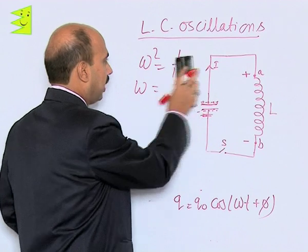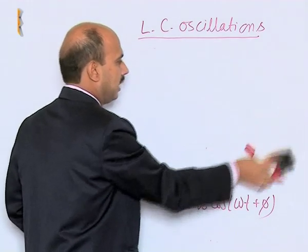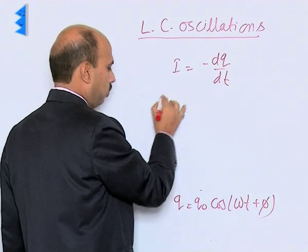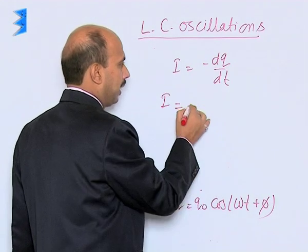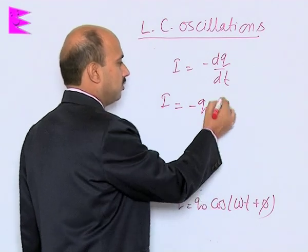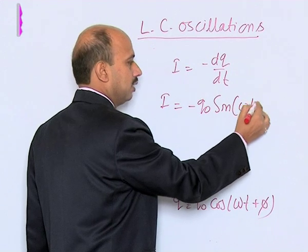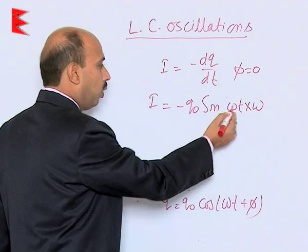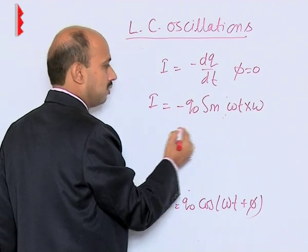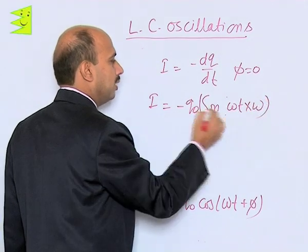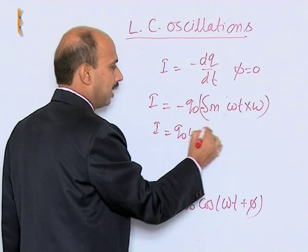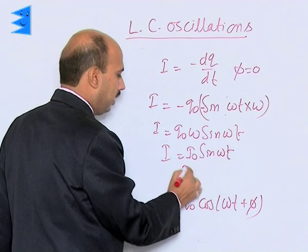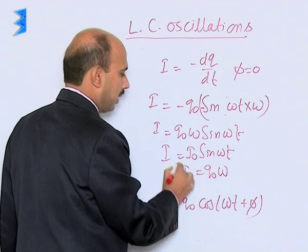We can also obtain the current from the charge equation by differentiating. Since I = −dQ/dt, we get I = −Q₀ω sin(ωt + φ). Taking φ = 0, and noting both the minus signs cancel, we can write I = Q₀ω sin(ωt). Therefore I = I₀ sin(ωt), where I₀ = Q₀ω is the maximum current.